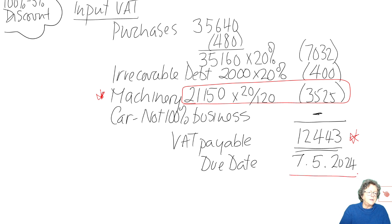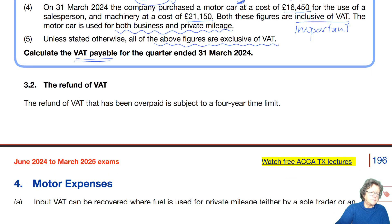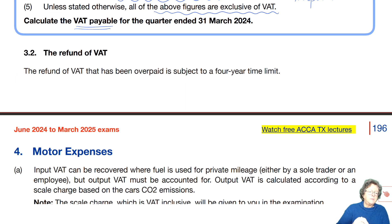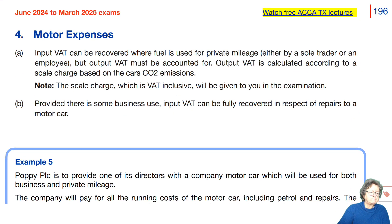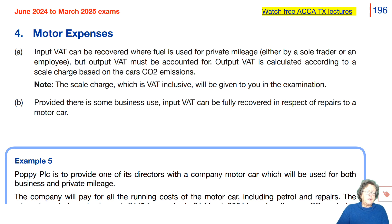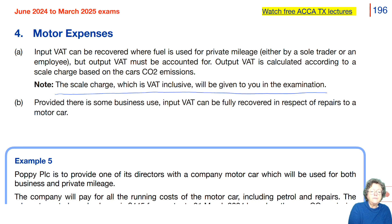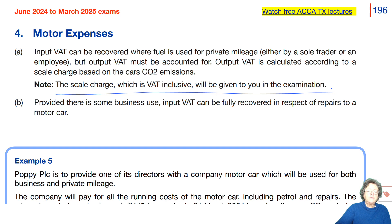That's the amount due on the due date. Going back to the notes: if you are entitled to a refund where VAT has been overpaid, that is subject to a four-year time limit — though you're never going to get that in an exam. On motor expenses: input VAT can be recovered where fuel is used for private mileage by the sole trader or an employee, but output VAT must be accounted for. Output VAT is calculated according to a scale charge based on the car's CO2 emissions. Input VAT can be recovered on repairs to a car provided there is some business use.